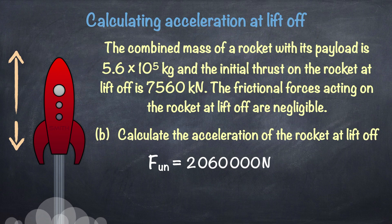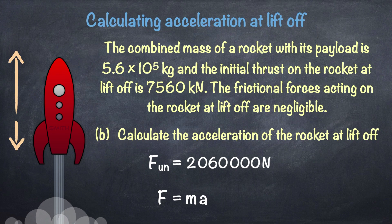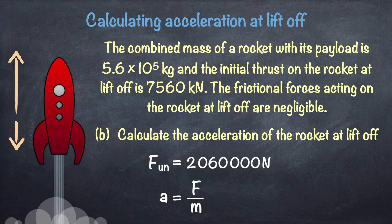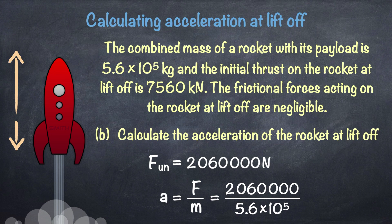Next up, we use the equation F is equal to MA. Where F is the unbalanced force acting on an object in newtons, M is its mass in kilograms, and A is its acceleration in meters per second per second. If we divide both sides by M, then we can make acceleration A the subject of the equation. That means that acceleration is 2,060,000 divided by the mass of 5.6 times 10 to the power of 5, which works out to two significant figures to be 3.7 ms to the minus 2.